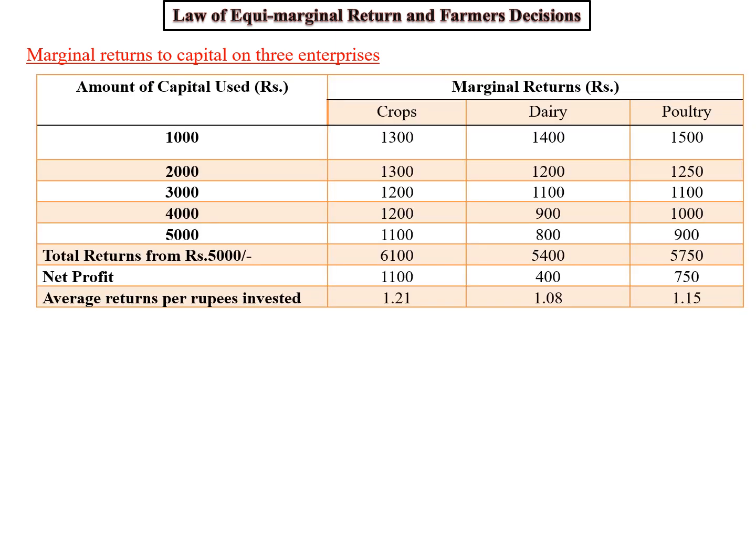Let's take an example. Many things come to the mind of the farming community: if I have land, whether I will go for crop, dairy, or poultry. Suppose the farmer invests 1,000 rupees — in the first attempt, you will get 1,300 rupees from crop, 1,400 rupees from dairy, and 1,500 rupees from poultry.